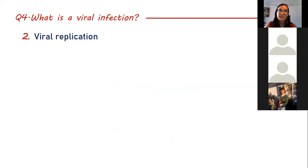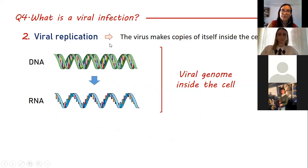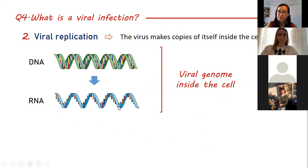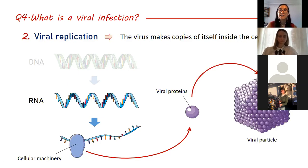Once the genetic material is free inside the cell, viral replication can start — this is the moment in which the virus makes copies of itself inside the cell. The genome is free inside the cell, and it uses the machinery of the cell, tricking it to stop producing proteins important for the cell and start producing proteins important for the virus. Viruses produce their own proteins inside cells, then assemble into viral particles. This is what we call viral replication — one copy turns into many copies inside the cell.